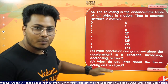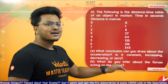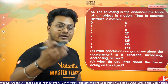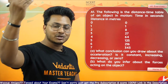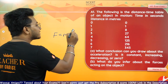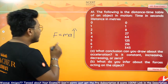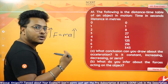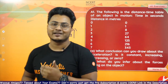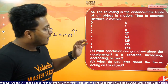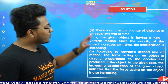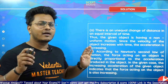Moving on to Part B: what do you infer about the forces acting on the object? If the object's acceleration is increasing, then the force acting on the object must also be continuously increasing to cater to that increasing acceleration. So the force on the object is continuously increasing.